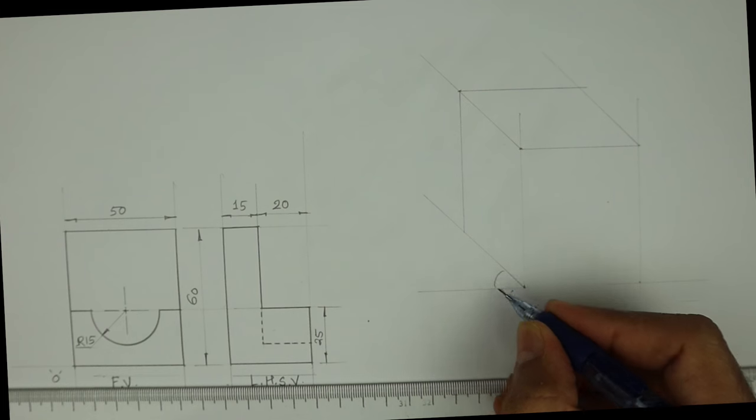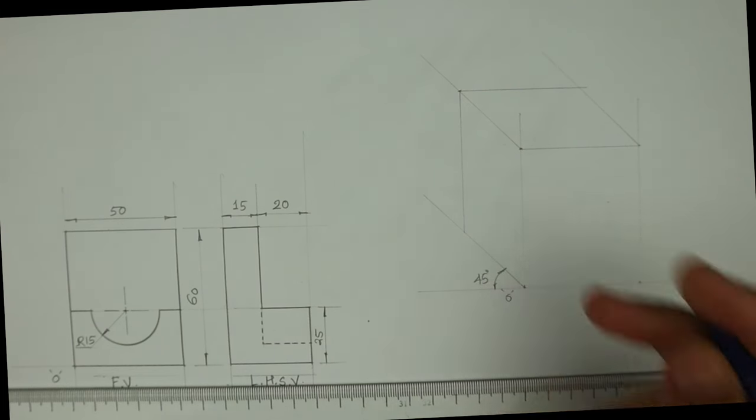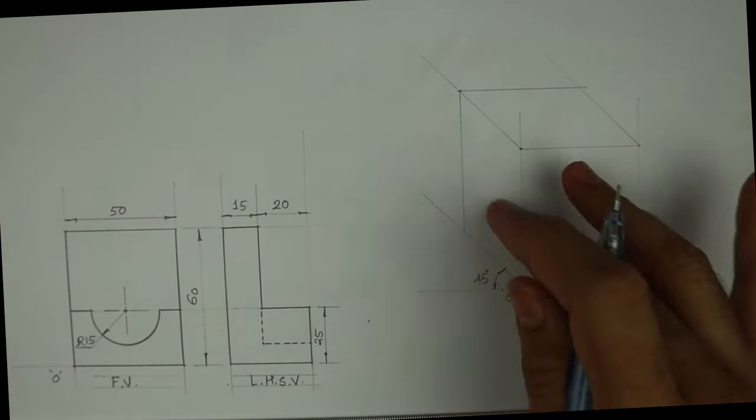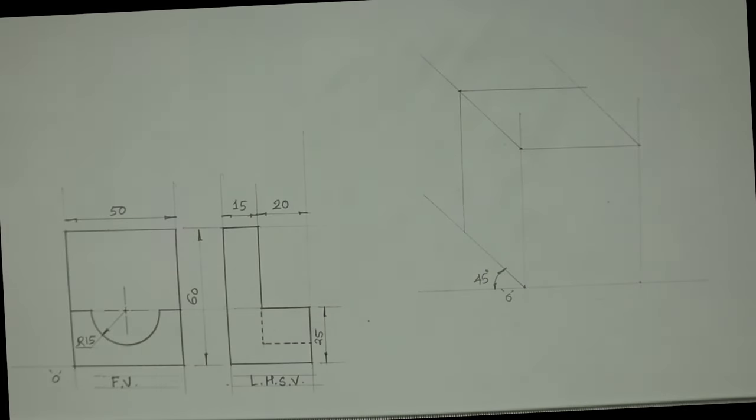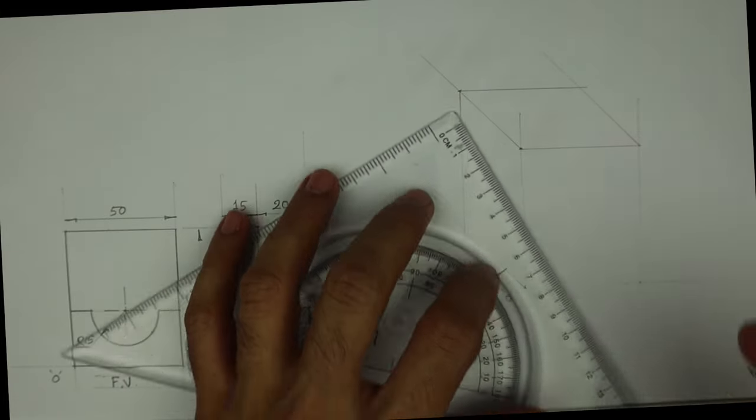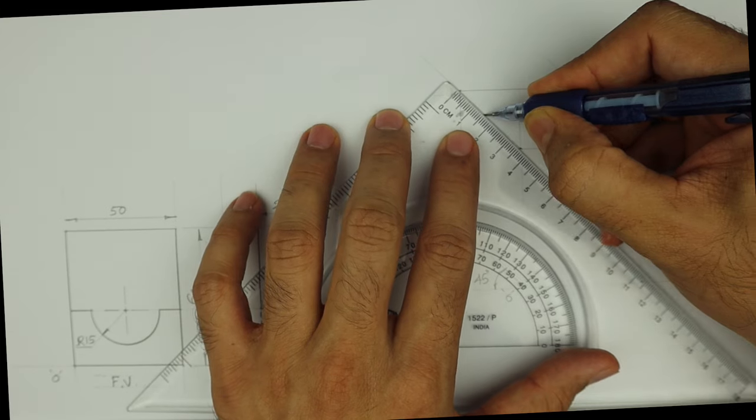And the side surface will be inclined at 45 degrees. So we are done with this. Now if you see this L shape in front view, we have two parts. Side view we have one part. See this, so we'll take 15.